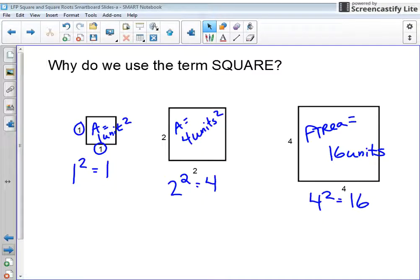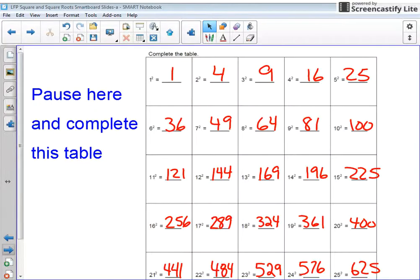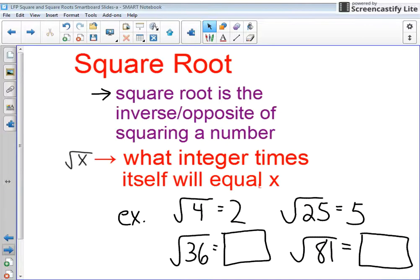Now, in math, there's many times when we talk about the opposite or the inverse operations of things. And that is the same thing that appears here with squares. So the opposite of a square or squaring a number is to take the square root of a number. And you can see the definitions on the board. Square root is the inverse opposite of squaring a number.